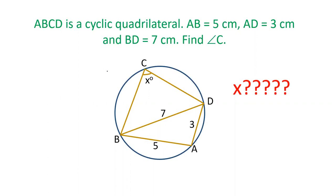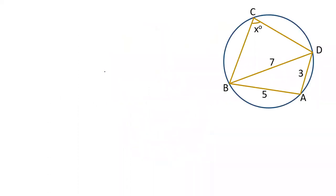Let's see how we can solve this question. For this question, we need to find out the value of angle A first. And by angle A, we will get the value of angle C, because in a cyclic quadrilateral the sum of opposite angles is 180 degrees. So if we know the value of angle A, we can find the value of angle C.